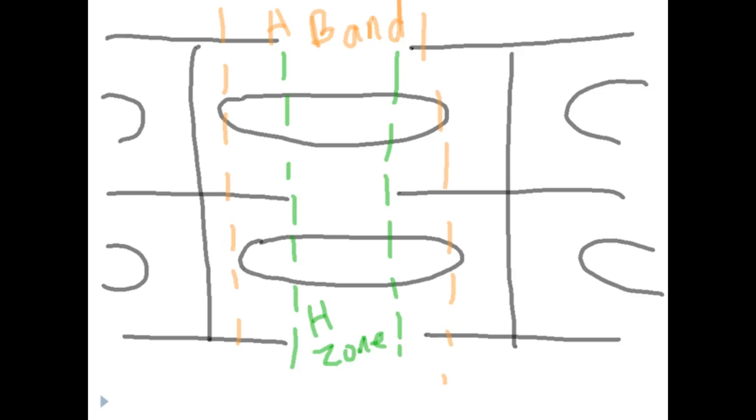So we have our A band and we have our H zone. Again, this is not very complicated as of right now. We're doing it piece by piece. Remember, we have something that goes right through the middle of this whole thing. So right through the middle. So this whole thing is the M line. And that's going to cut through the middle.